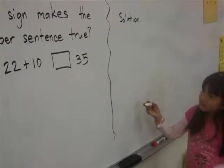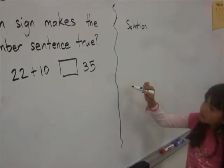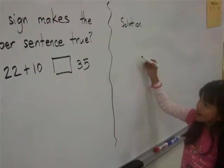We are going to put 22 plus 10 blank 35.